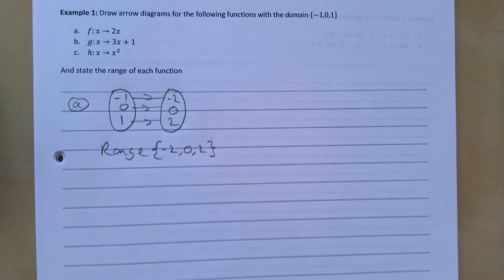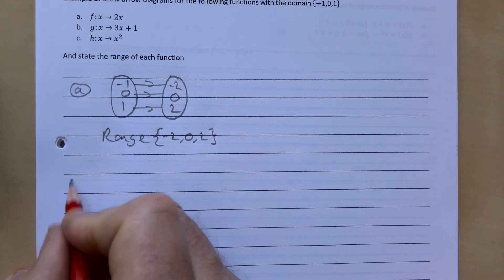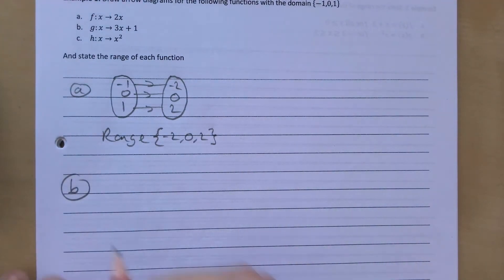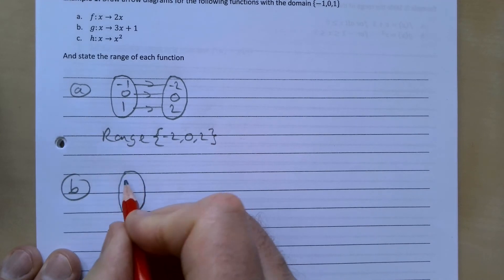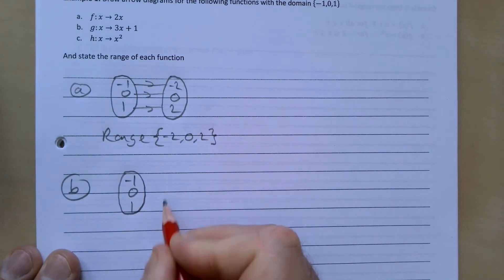So what about the next one, for part (b)? Again, we're using the same domain: {-1, 0, 1}.